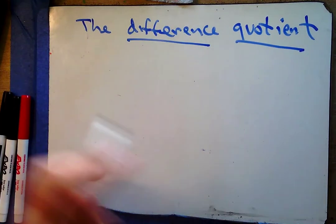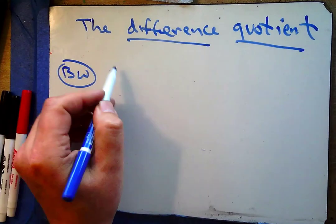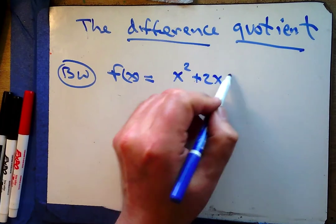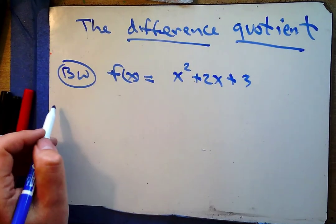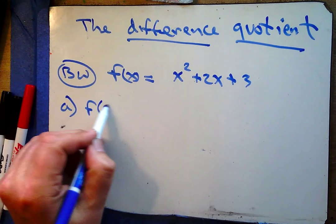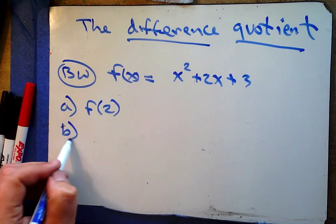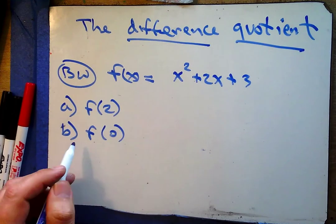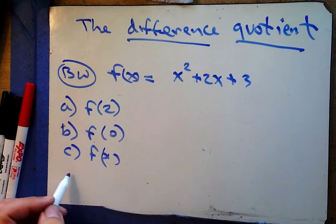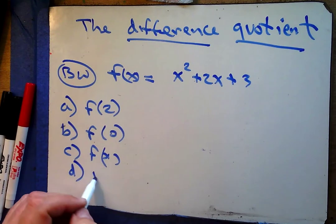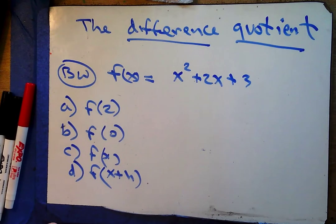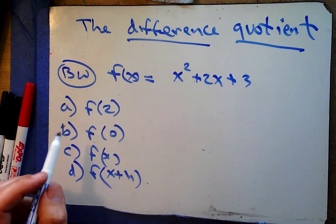First, some network. Given f(x) = x² + 2x + 3, can you please find: a) f(2), b) f(0), c) f(x), and d) f(x+h)? Give it a try, pause the video, find these things, and come back and tell me what you got.